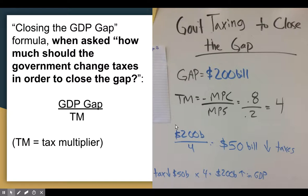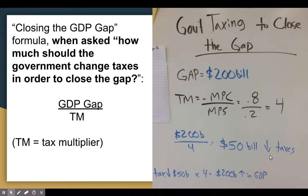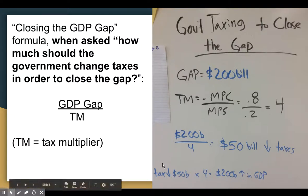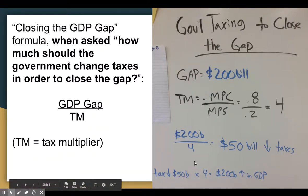Same process as before: to figure out how much the government should change taxes to close the $200 billion gap, we do the GDP gap of $200 billion over the tax multiplier of four. That gives us $50 billion. We would want to decrease taxes by $50 billion, because if the government lowers taxes, consumers have more money and go out and spend it. If you had said raise taxes by $50 billion, you'd actually be making the gap worse by taking money away from consumers. You can verify: $50 billion times a multiplier of four equals a $200 billion increase in GDP.